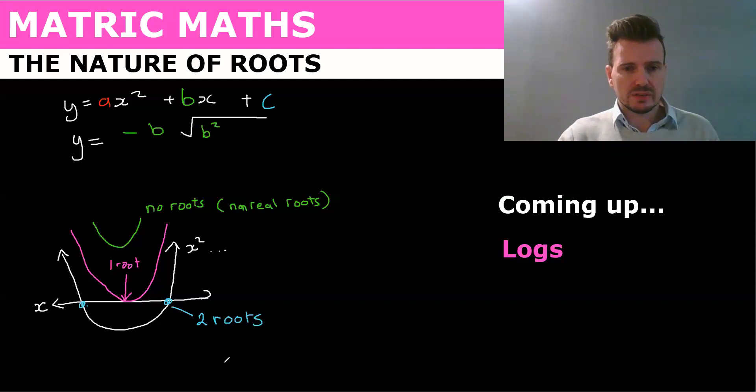Plus or minus the square root of b squared minus 4ac all over 2a.